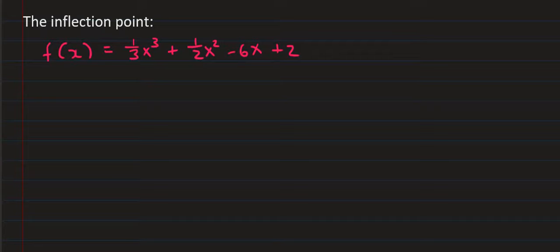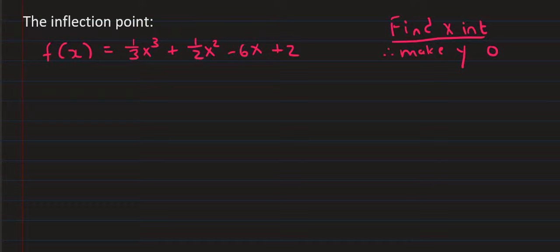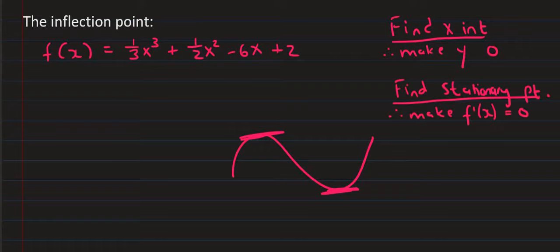If I gave you this equation and asked you to find the x-intercepts, how would you do that? Well, you would make y equal to zero. If I asked you to find stationary points — a point like this or like that — that's where the gradient is zero. So you would take the first derivative and make that equal to zero. To find the stationary point, you make the first derivative equal to zero.